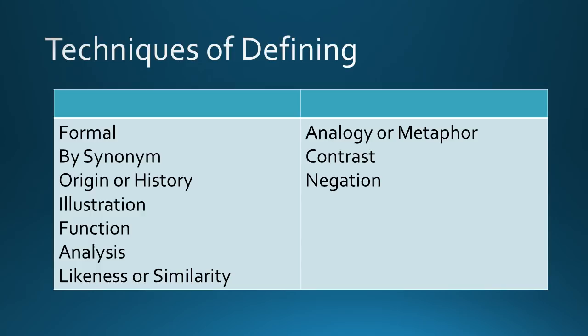Number three, by origin or semantic history. This means etymology, or history of the word. Let us look at the example. The word yoga comes from the Sanskrit root meaning to join, and yoga indeed come from the same root. Yoga seeks to join the individual's consciousness to its spiritual source.